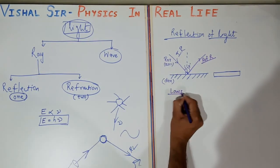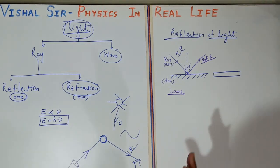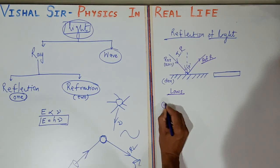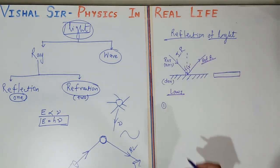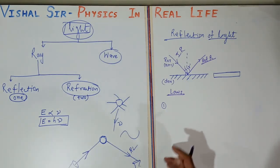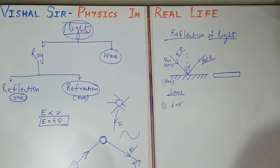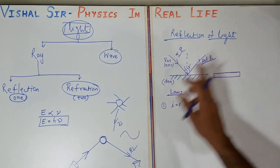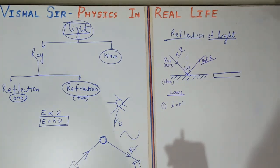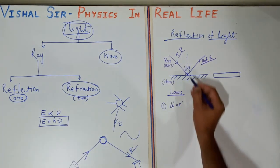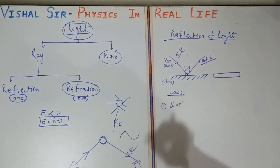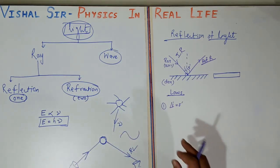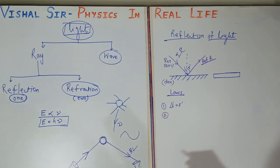Now, the laws of reflection of light — there are two laws. According to the first law: the angle of incidence is equal to the angle of reflection, i.e., i = r. Note that we measure angles with the normal, not the surface — measuring with the surface gives the glancing angle. You also saw this in the sound chapter in class 9, where sound reflects back at the same angle. The same applies here.